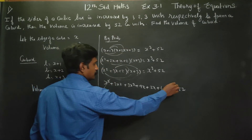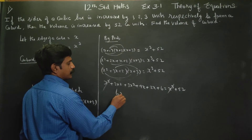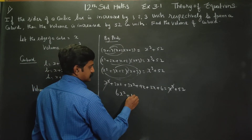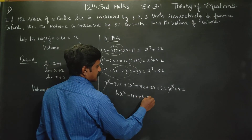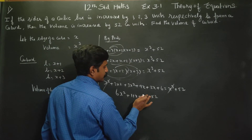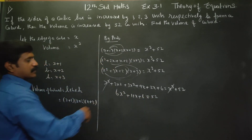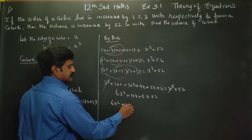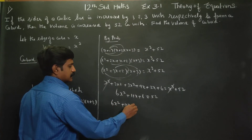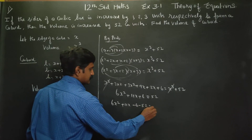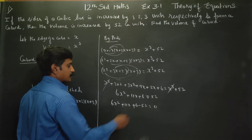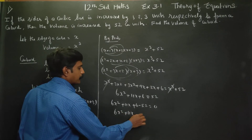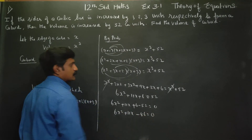The x³ terms cancel. Combining like terms: 6x² + 9x + 12x + 6 = 52, giving 6x² + 11x + 6 − 52 = 0, so 6x² + 11x − 46 = 0.